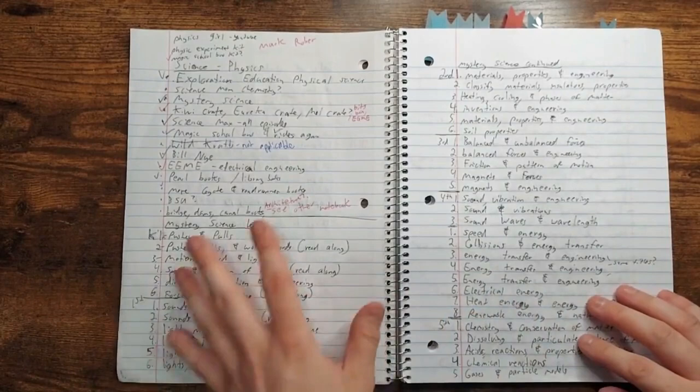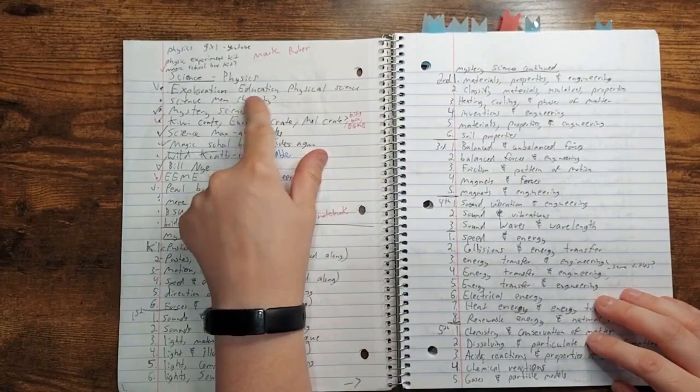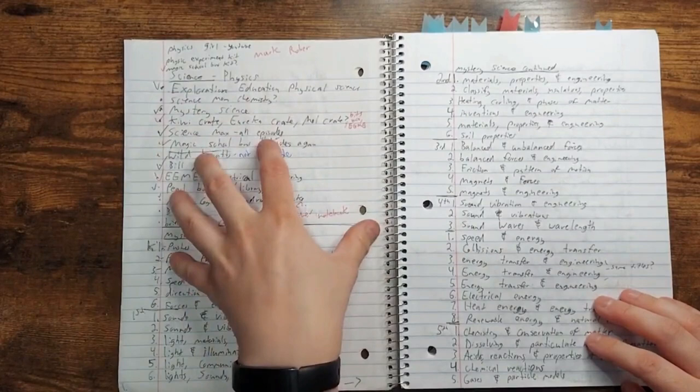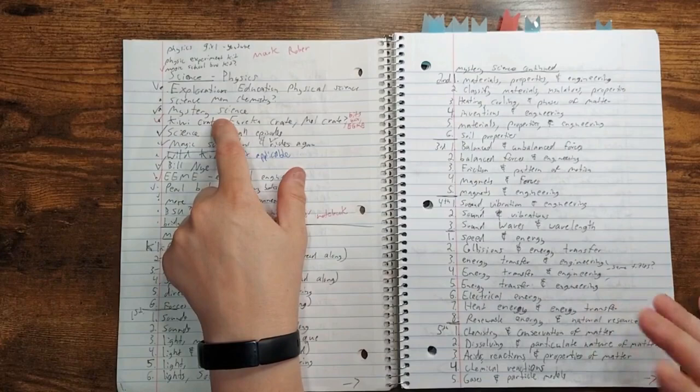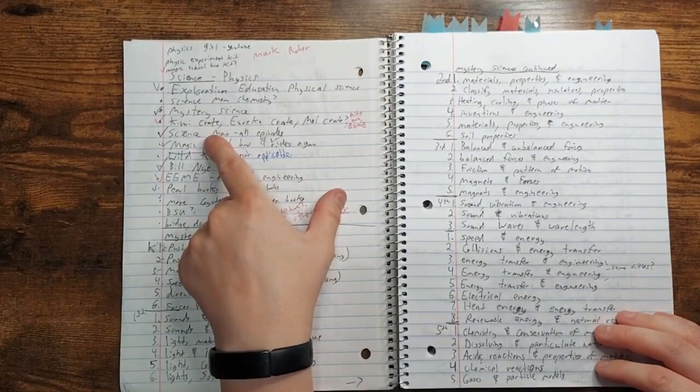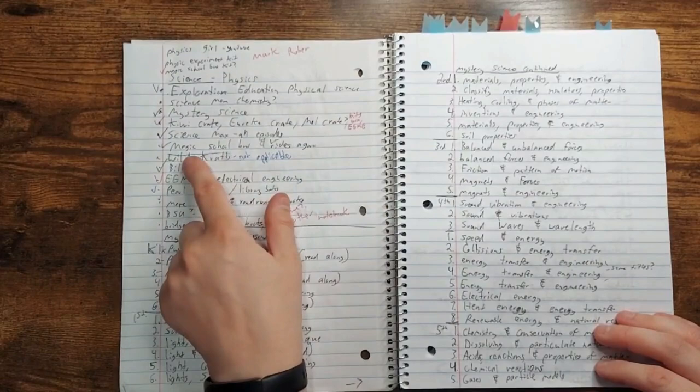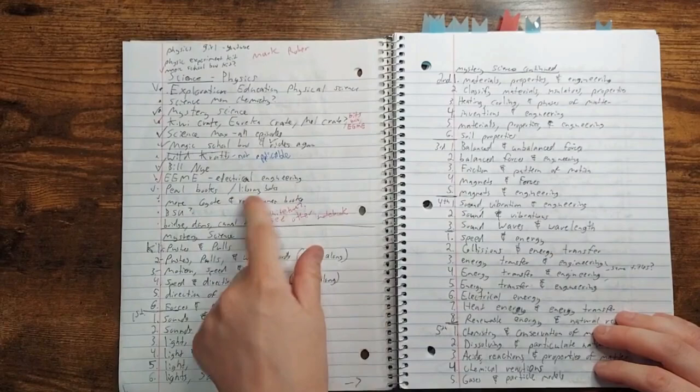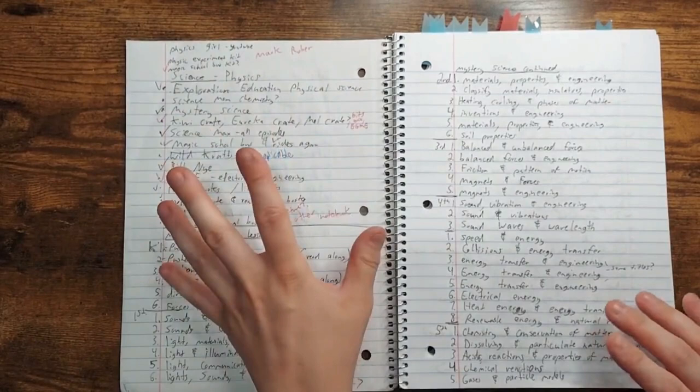Okay, so for science, it's kind of like a brain dump. I have my main science curriculum we're using this year, and then I have different ideas to supplement that. We're doing physics this year. Mystery science, they have some lessons on there that correspond to physics. These are ideas for subscription boxes, KiwiCrate, EurekaCrate, MailCrate, BitsBox, library books, just all the things that could help with physics. I really like to supplement any curriculum I get no matter how good it is. So that's why there's all these extra things.